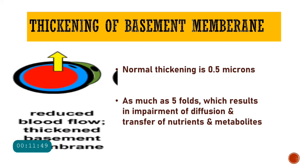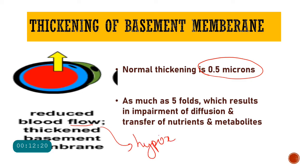Next is thickening of the basement membrane. The normal basement membrane is about 0.5 microns, and in diabetes mellitus, deposition of glycation products causes it to thicken. Because of this thickening, the lumen of the capillary decreases, causing reduced blood flow and hypoxia. Additionally, thickening of the basement membrane impairs diffusion and transfer of nutrients and metabolites across the blood vessel — all leading to hypoxia and decreased nutrients to an already compromised retina.